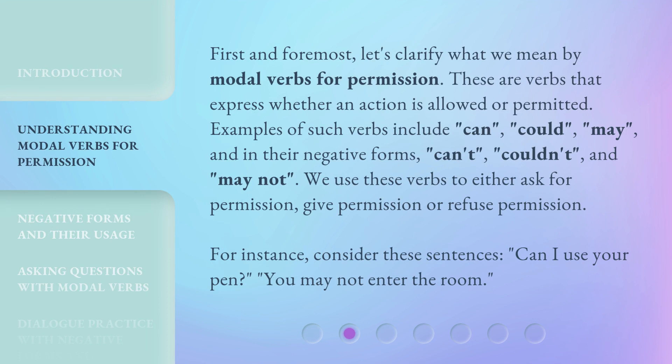First and foremost, let's clarify what we mean by modal verbs for permission. These are verbs that express whether an action is allowed or permitted. Examples of such verbs include: can, could, may, and in their negative forms, can't, couldn't, and may not. We use these verbs to either ask for permission, give permission, or refuse permission. For instance, consider these sentences: 'Can I use your pen?' and 'You may not enter the room.'